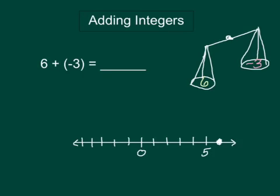6 plus negative 3. When you're adding integers, you want to look and see which one you have more of. You have more positives, 6 positives combined with 3 negatives. Find the difference and the answer is a positive 3.